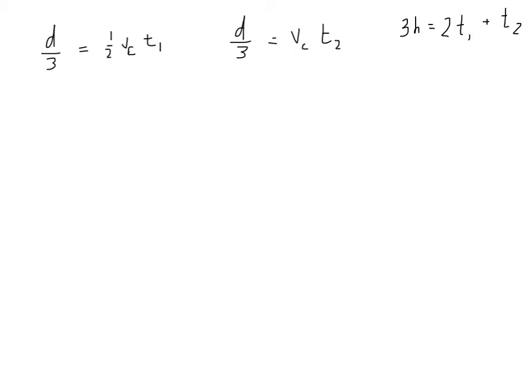So there are my three equations from the previous slide. We're trying to solve for T_2. So we don't need D. We want to get rid of D. So what I propose doing is setting this equal to this. How can I do that? Well, because this equals D/3, and this equals D/3, therefore this equals this. So let's write that out. One half V_c T_1 equals D over 3, and D over 3 also equals V_c T_2.